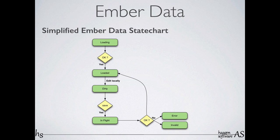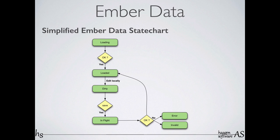This is a simplified state chart for Ember Data. The data starts out loading while it waits to come in from the server, then it's loaded once Ember Data has completed its propagation into Ember objects. Typically you'll make some edits to your data, which means your models become dirty. Then you can save that data, which sends it to the server. It'll be in an in-flight mode until the server responds — either it times out and you get an error, it can't be parsed and the data is invalid, or it goes back to loaded. The happy path is just within that circle.